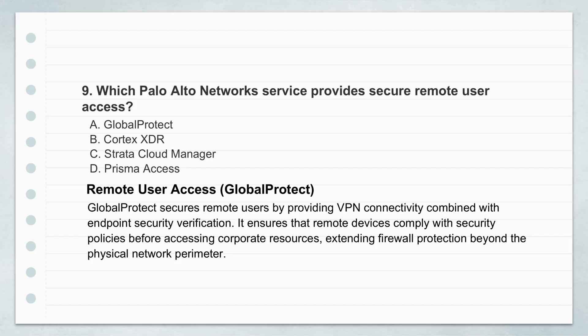Remote work is huge now, basically permanent for many people. How do you extend corporate security out to someone's home office or wherever they are? Palo Alto's solution is GlobalProtect. It's their answer for secure remote access, and it's pretty comprehensive. It extends your full set of firewall security policies out to remote users, no matter where they connect from — through robust VPN, but also endpoint protection. It ensures remote devices are protected, stay compliant, and are treated like a secure part of the corporate network.